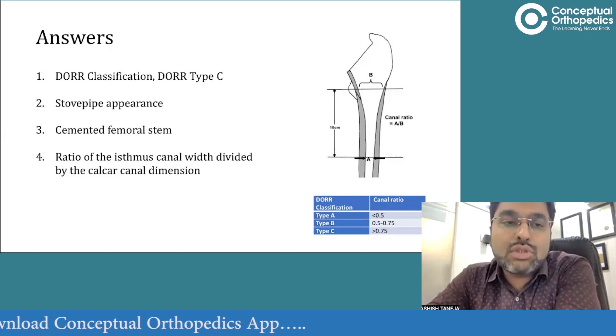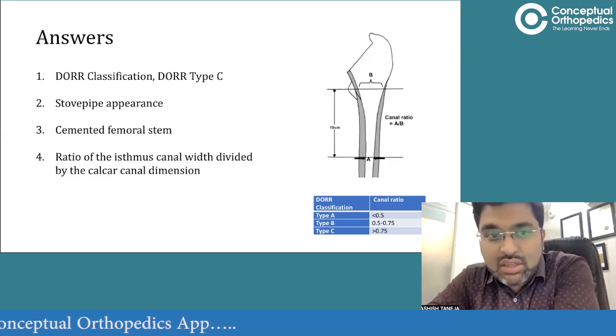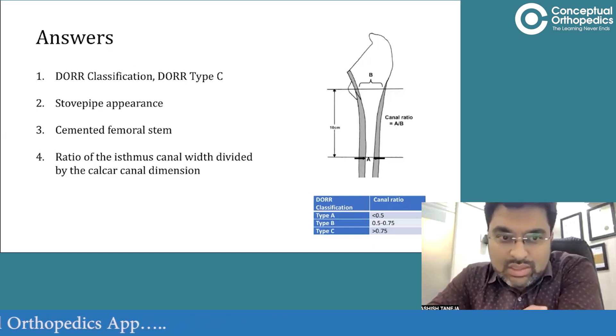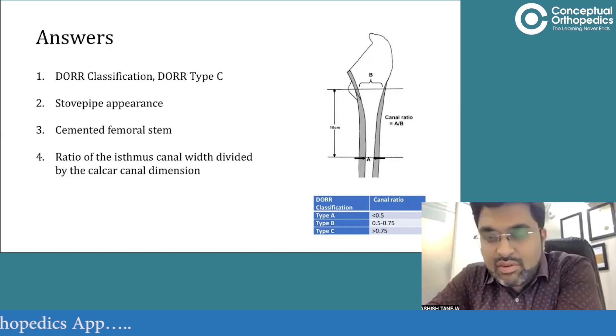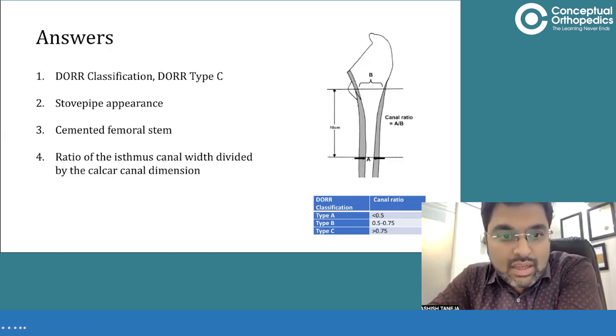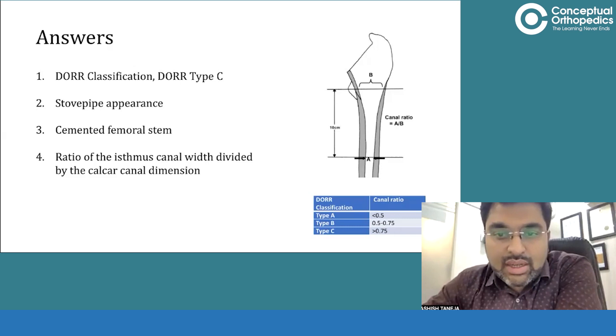The typical name given to type C canals is stovepipe appearance. For stovepipe canals we always do a cemented stem. That covers the canal ratio and Dorr classification.